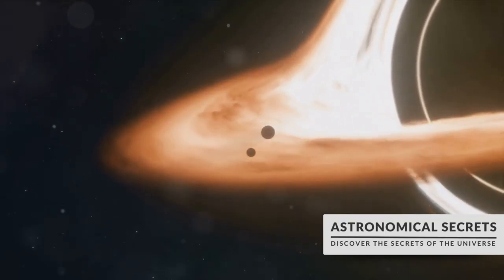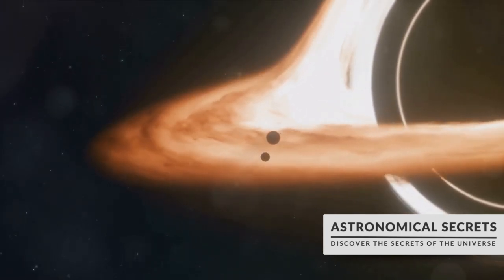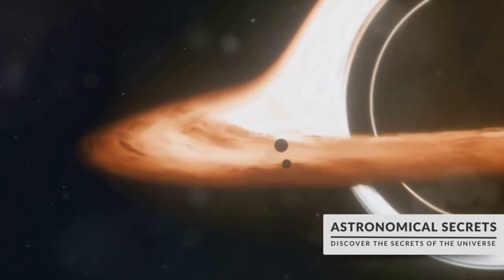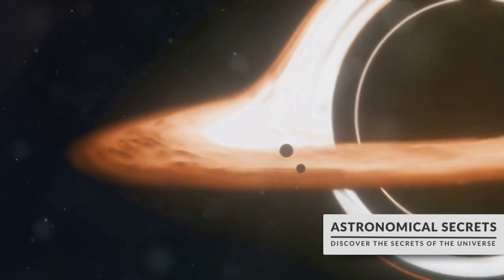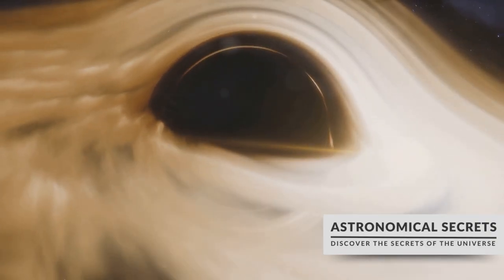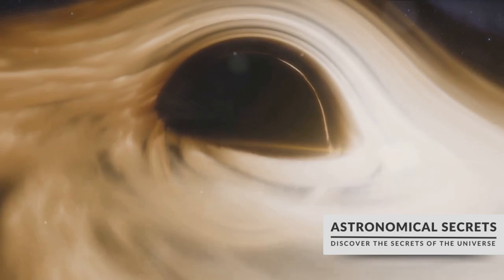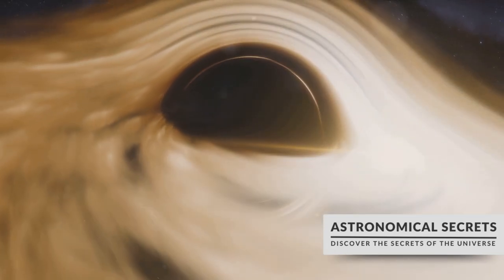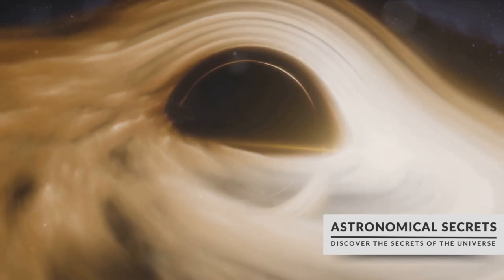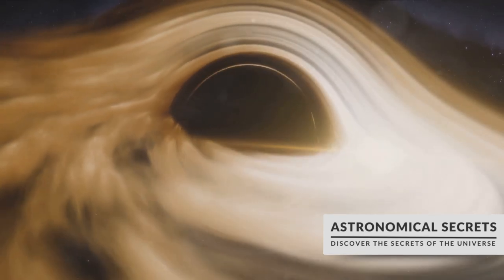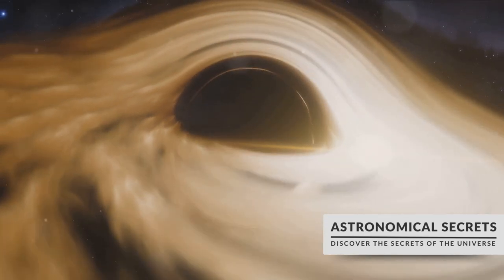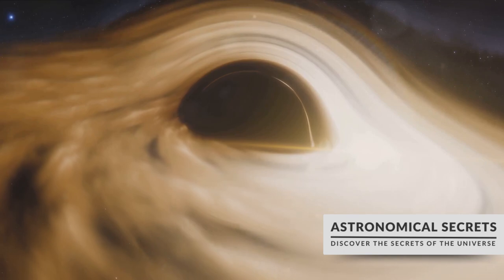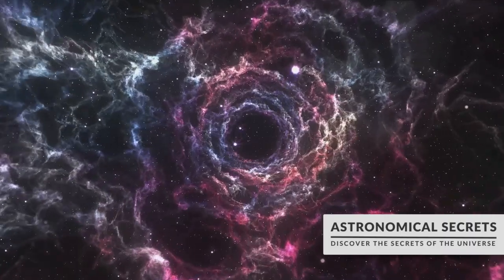Moreover, researchers are trying to understand more about the event horizon, the boundary around a black hole from which there is no return. There are speculations about what an observer falling into a black hole would experience. Would they be stretched into a long, thin strand, a process humorously termed spaghettification? Or would they encounter a firewall, a proposed violent phenomenon at the event horizon?